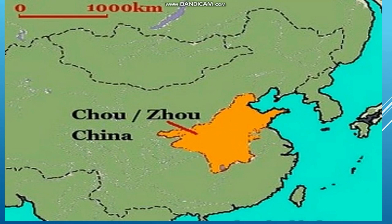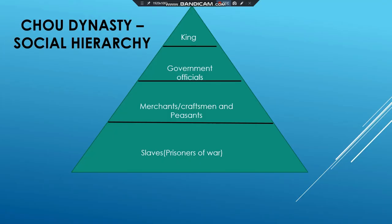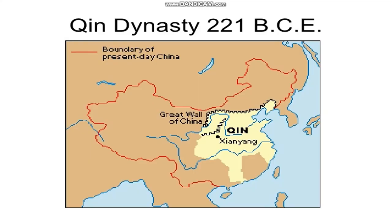The Zhou dynasty continued the good traditions of Shang culture and ruled till 250 BCE. In the Zhou dynasty, there was a section of officials below the kings. The king allotted portions of land to these officials; in return, the officials supported the king during battles. In the social hierarchy, the next level consisted of merchants and craftsmen, followed by a great majority of peasants. At the lowest level were slaves and prisoners of war, who were made slaves by the kings.